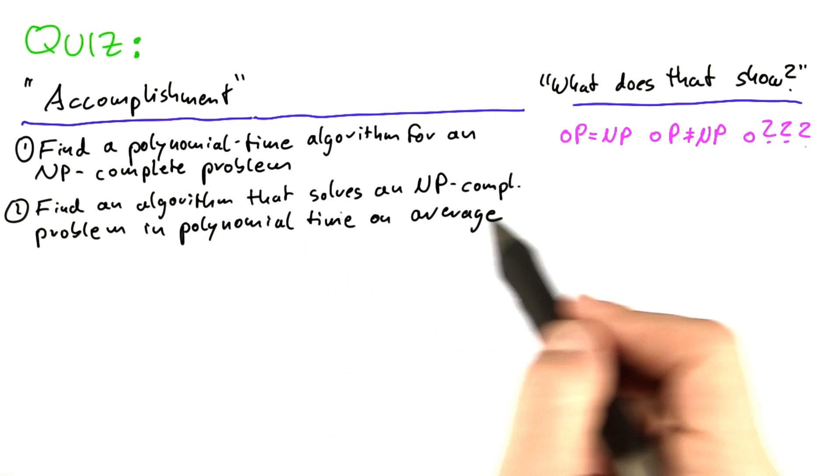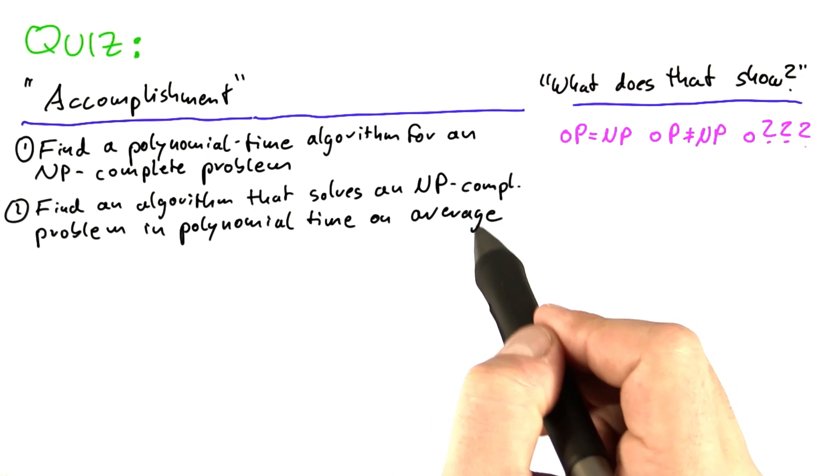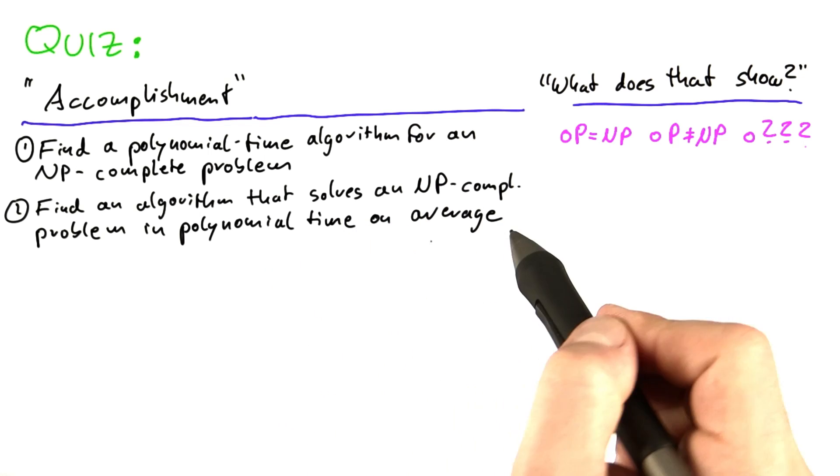What if you found an algorithm that solves an NP-complete problem in polynomial time on average—not worst case running time, but average case running time?